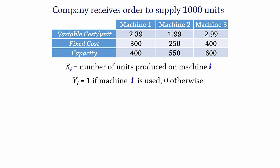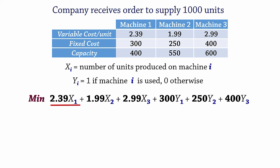So for the objective function, which is to minimize total costs, we write, minimize 2.39x1 plus 1.99x2 plus 2.99x3 plus 300y1 plus 250y2 plus 400y3. That is, we multiply variable costs by unit produced and multiply fixed costs by the corresponding 0,1 variables. When y equals 1 here, for example, it means that machine 1 is used, and the fixed cost of 300 will be incurred. And when y1 equals 0, machine 1 is not used, so the fixed cost of 300 will not be incurred.